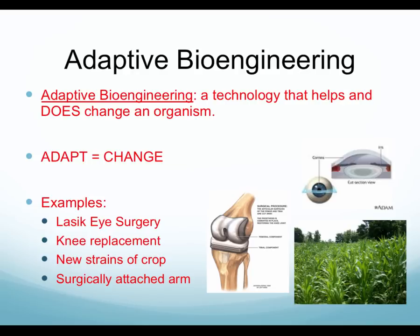Some examples include LASIK eye surgery — if you have LASIK done to your eyes, you can't undo that procedure, so it is adaptive. The same thing with a knee replacement: you place a device inside the knee through surgery and it cannot be removed easily, so it's adaptive. New strains of crops that are modified are also adaptive bioengineering, because once you create a new strain of a crop, that's what it is until you change it into something else. A surgically attached arm is also adaptive, as it is sewn on surgically to give the organism the opportunity to use the arm.